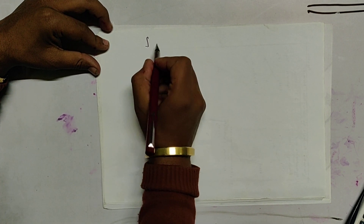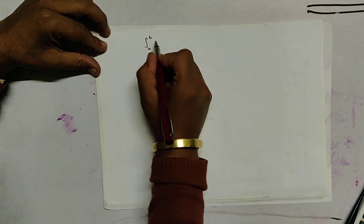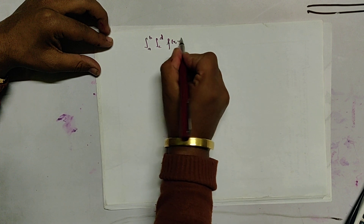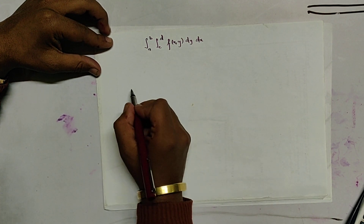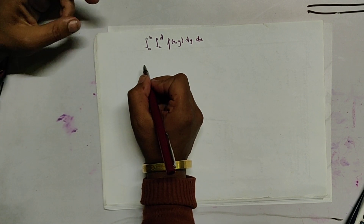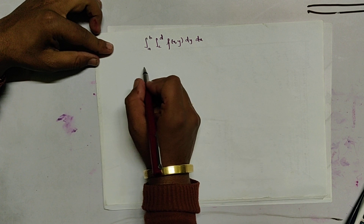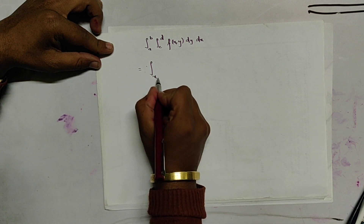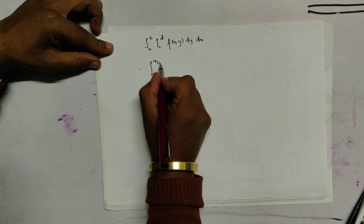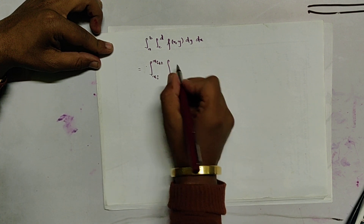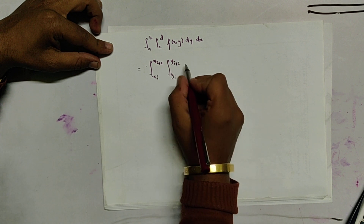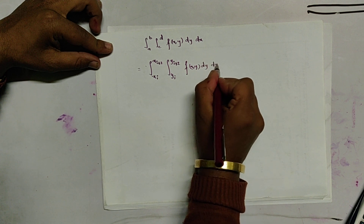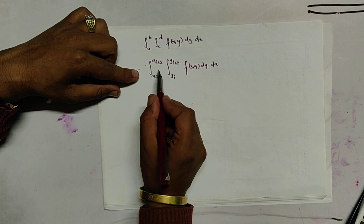Let us consider double integration as integral from a to b, c to d, of f(x, y) dy dx. Since the trapezoidal rule uses the n equals 1 form, let us simply use the n equals 1 form over the range x_i to x_{i+2} and y_i to y_{i+2} for f(x,y) dy dx — using a short range from i to i+2.